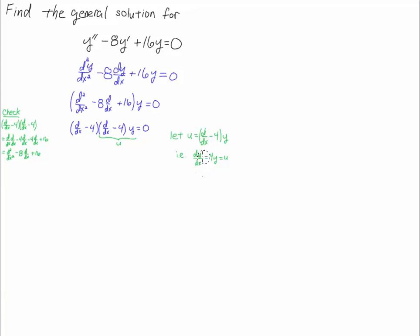If I distribute the y, or apply this operator to y, I get dy dx minus 4y equals u if I shift that over to the right-hand side. So that leaves me with an ODE here on the left, this operator ddx minus 4 being applied to u. And then if I apply that to u, I have du dx minus 4u. Now you'll see that I'll get one solution for this ODE and another solution for this ODE after I solve for u here. So let's just go ahead and do that.